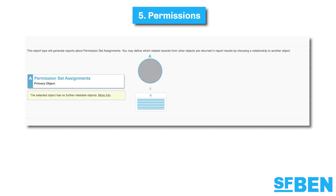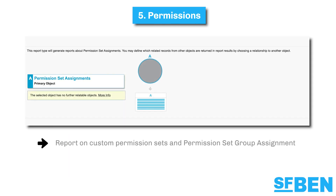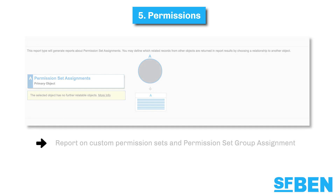At number five, we have a record number of updates to permissions in this release. With the impending retirement of permissions on profiles, it's really important to stay up to date on the latest permission changes. You can now create a custom report type using permission set assignment as the primary object. Using this report, you can view all users assigned to a custom permission set or permission set group.